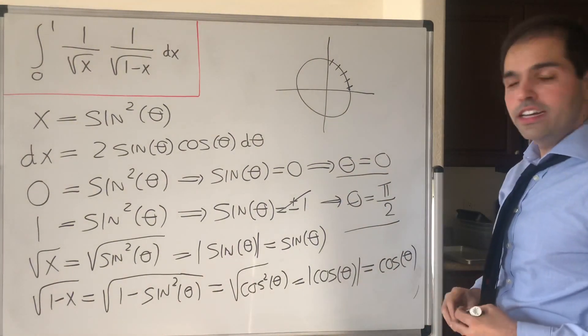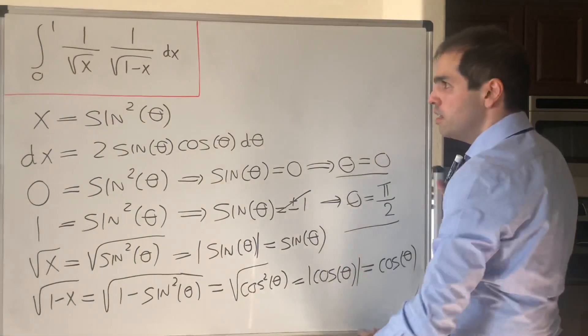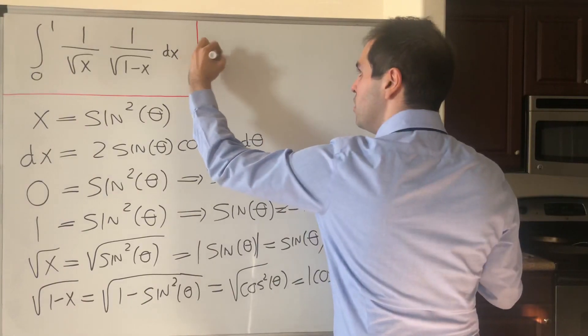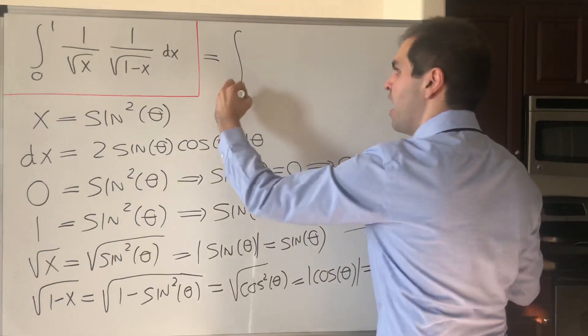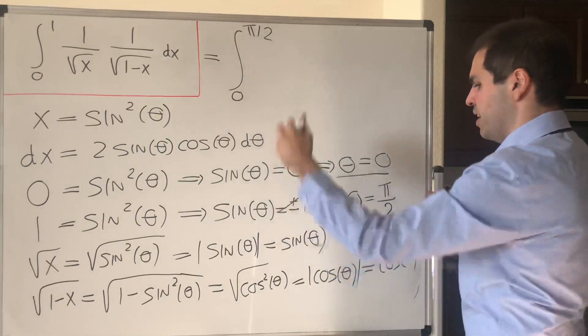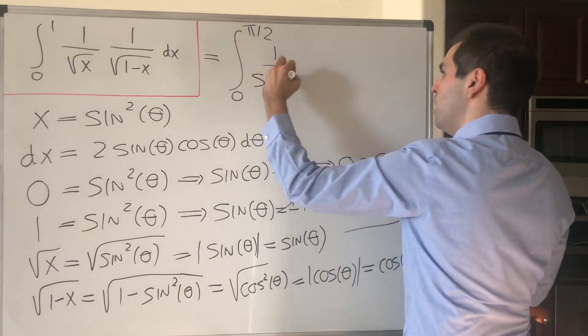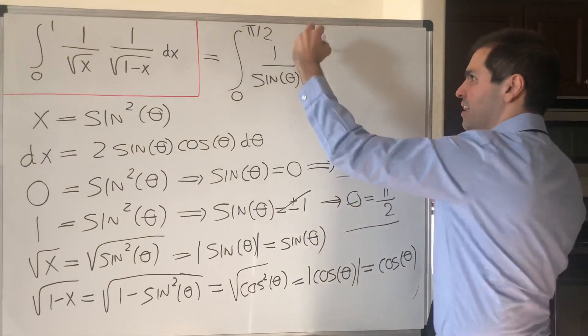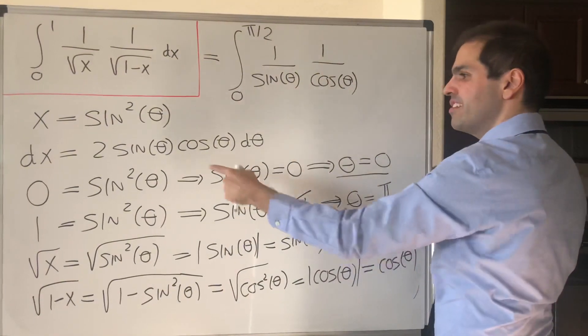Last but not least, what happens here? So this integral just transforms into the integral over our new endpoints, 0 and pi over 2, 1 over sine of theta, 1 over cosine of theta.